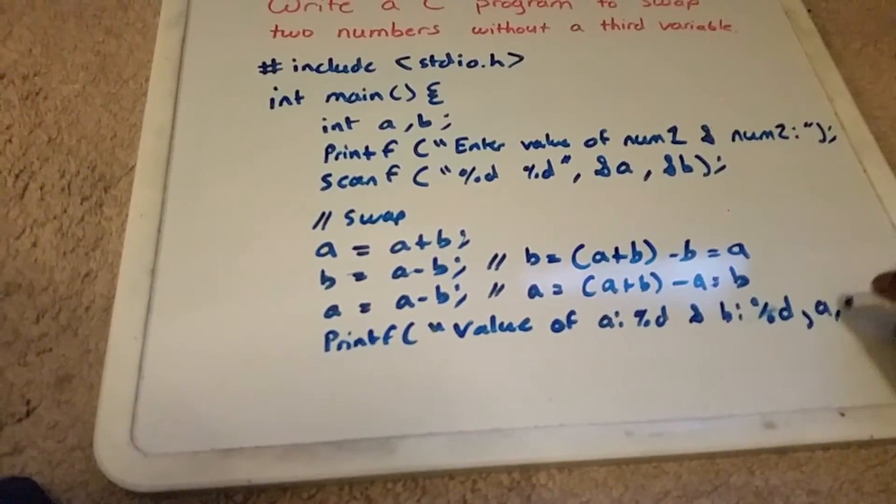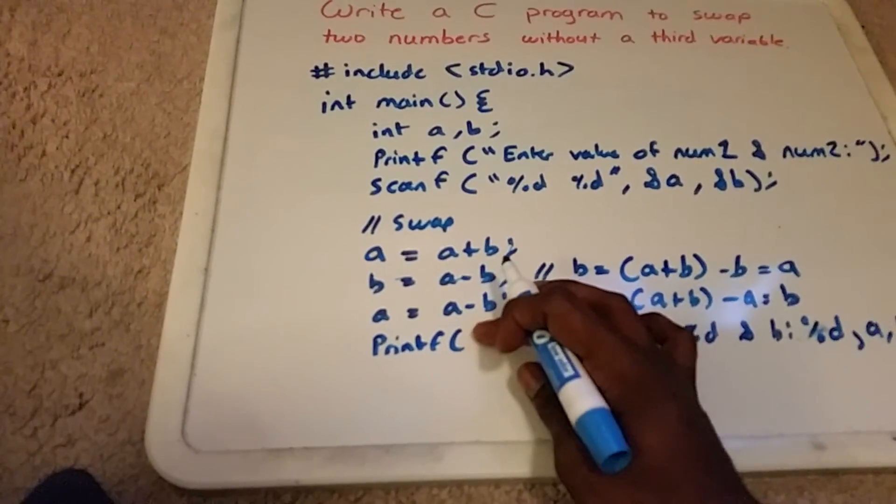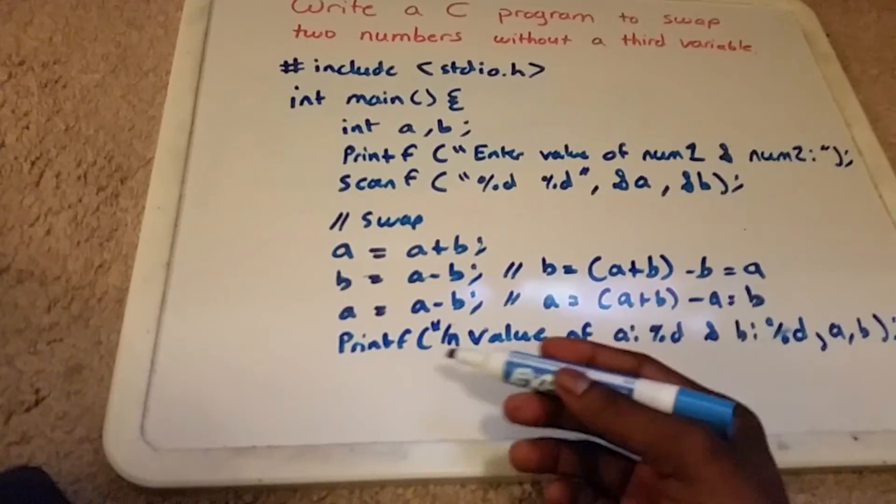So we're going to put a comma here, a, comma b. And you're probably going to want to put a newline there, newline break.